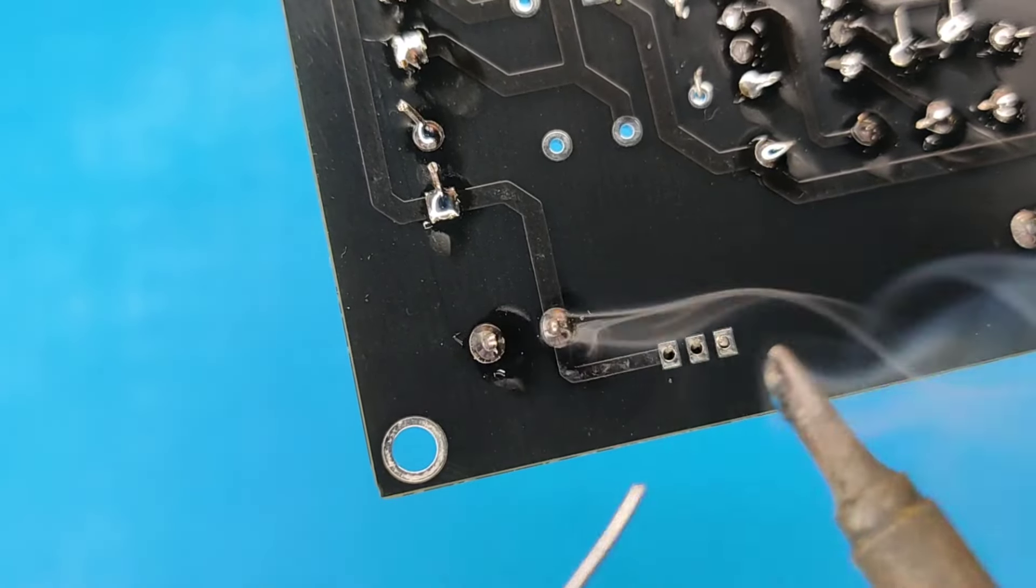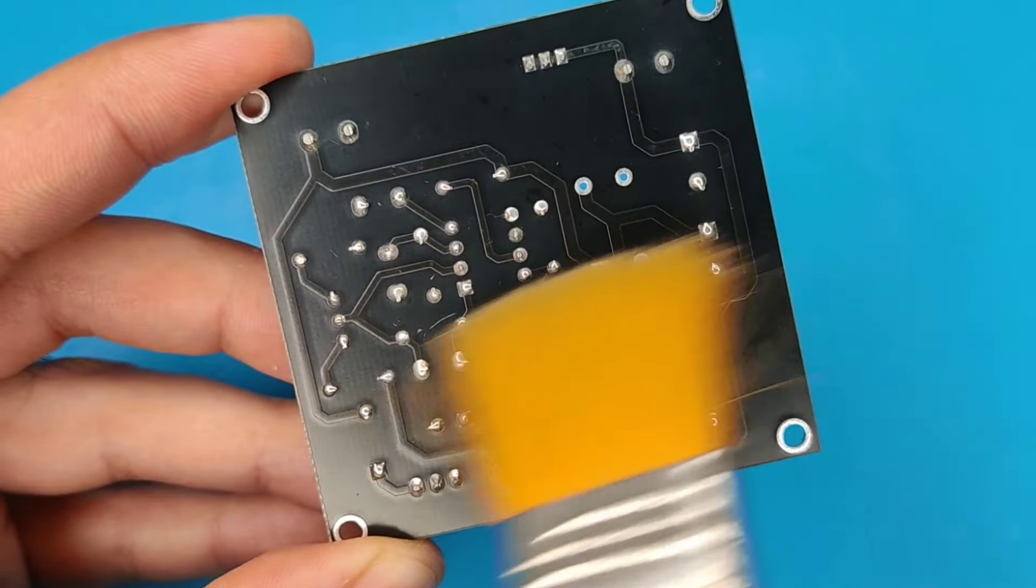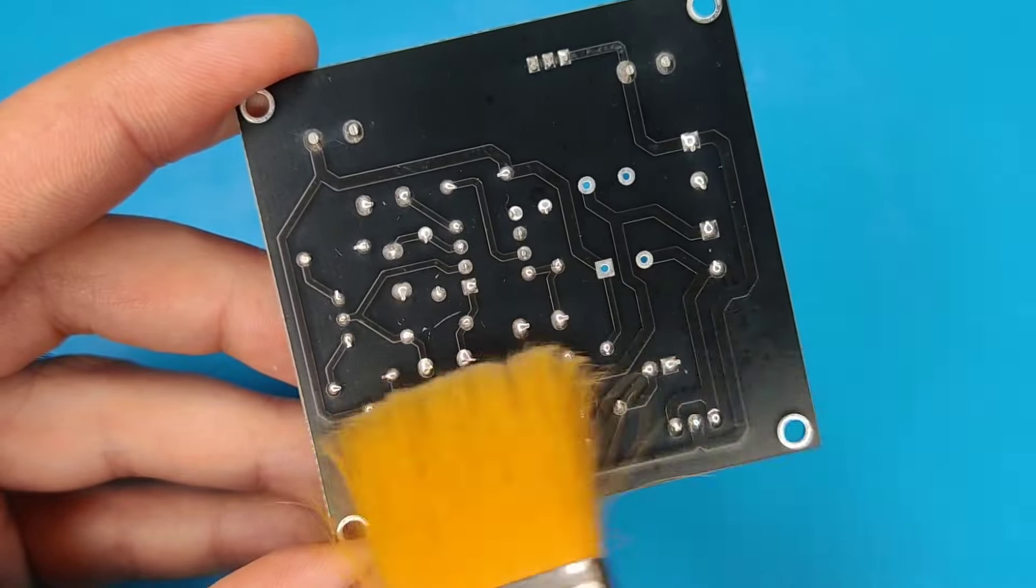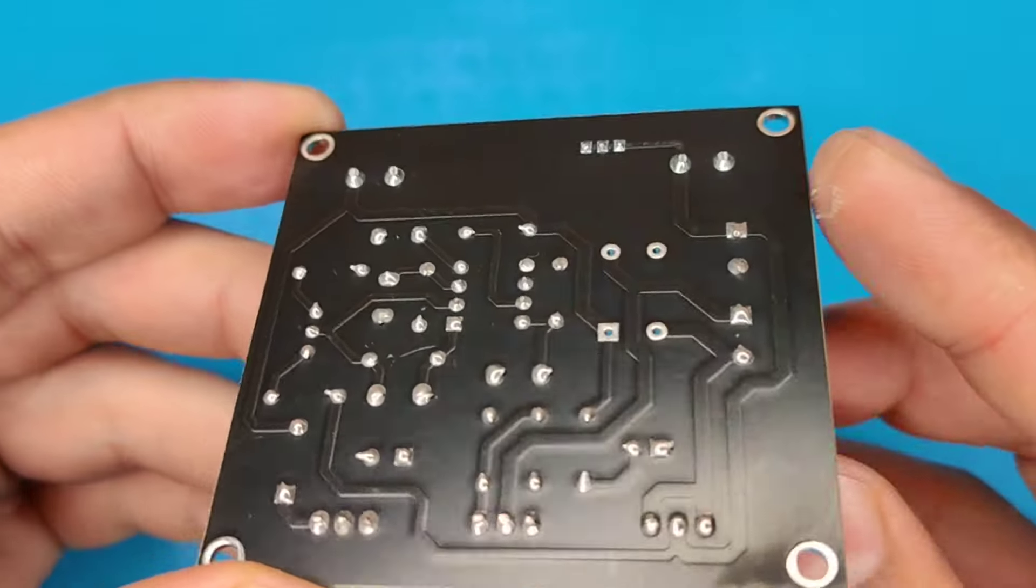And after spending some time with the soldering process, I cleaned the PCB with isopropyl alcohol. And here our PCB is looking nice and clean.